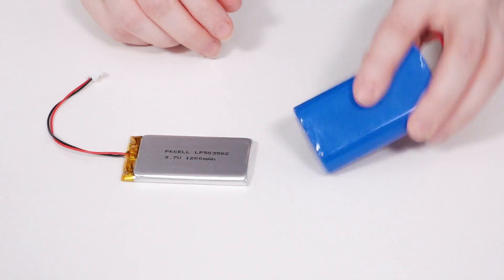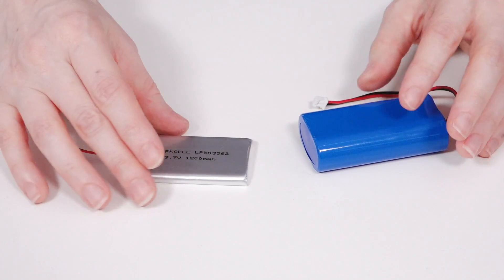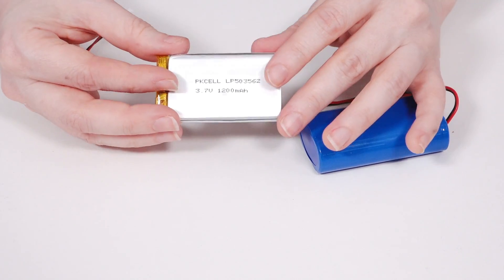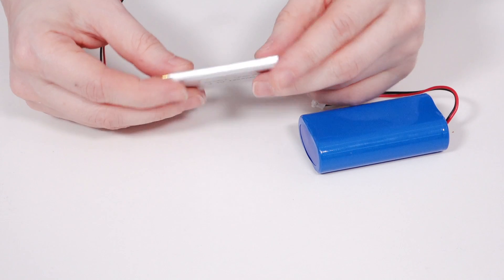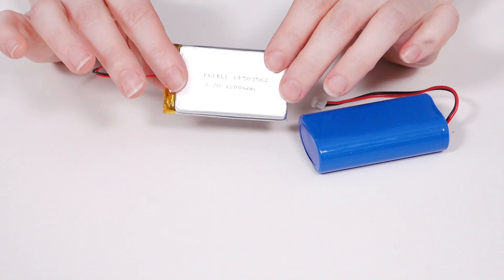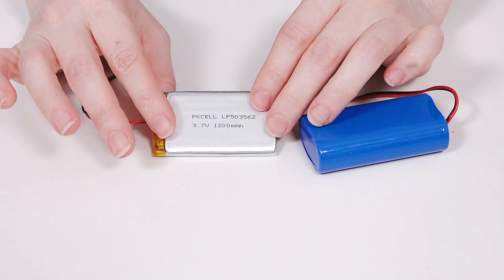Lithium ion batteries come in a hard shell case so they're pretty durable, but lithium polymer batteries, to save size and space, come in these soft silver pouches, so they're quite delicate.